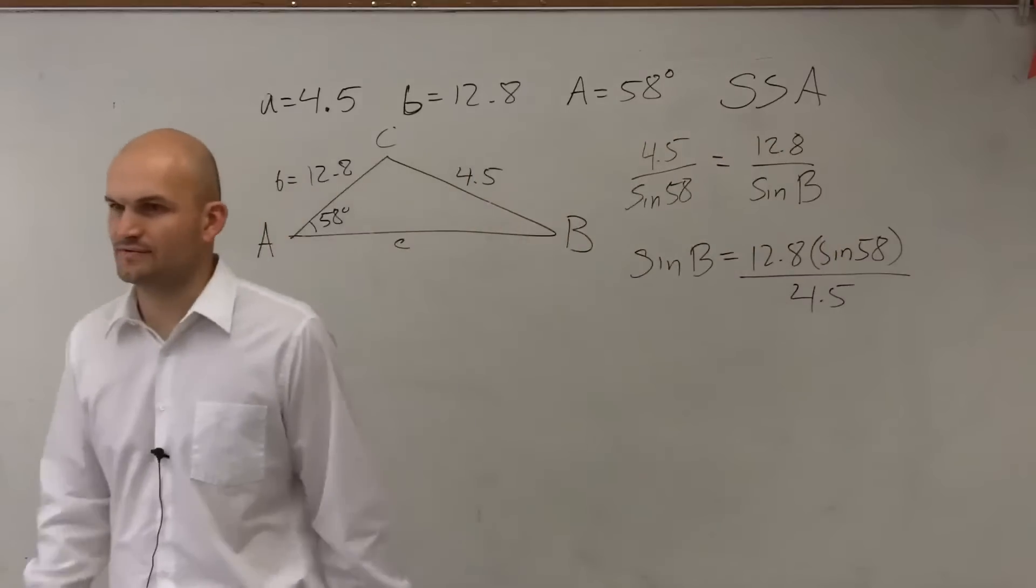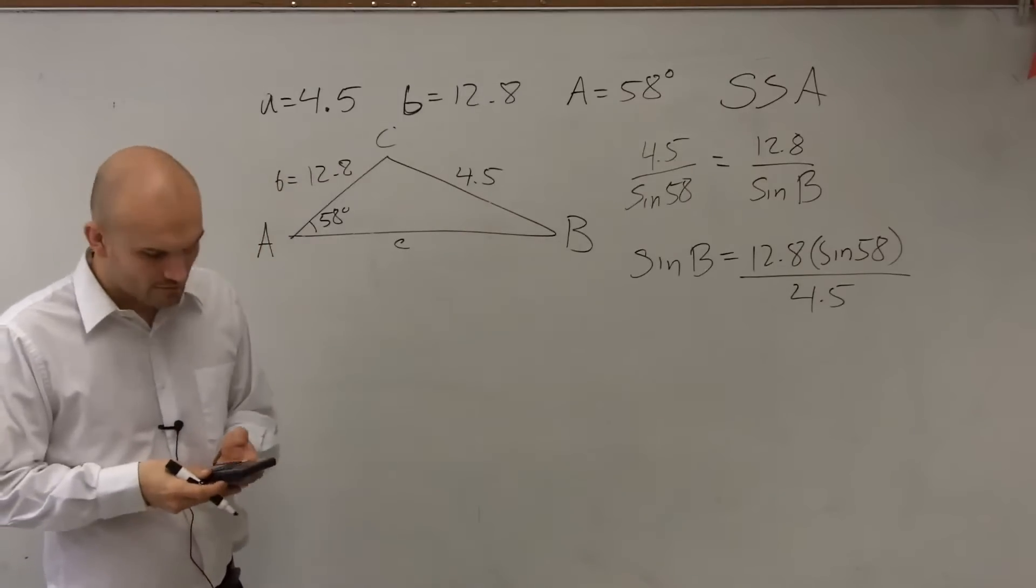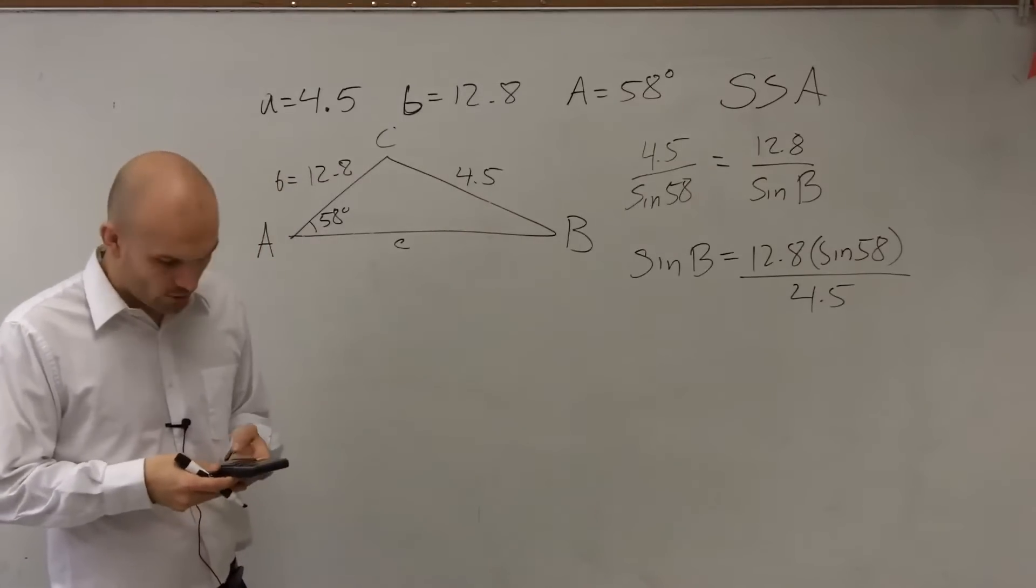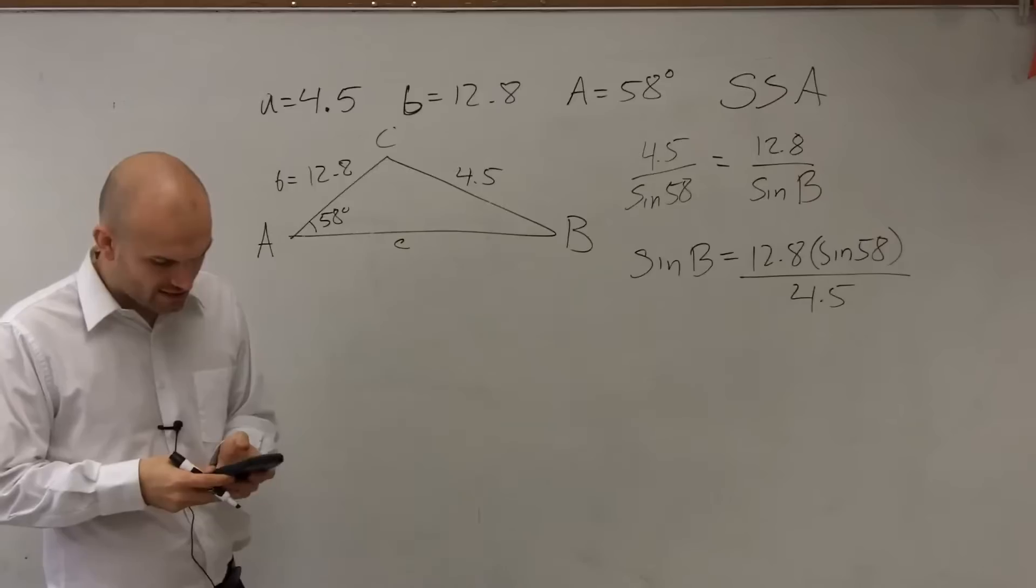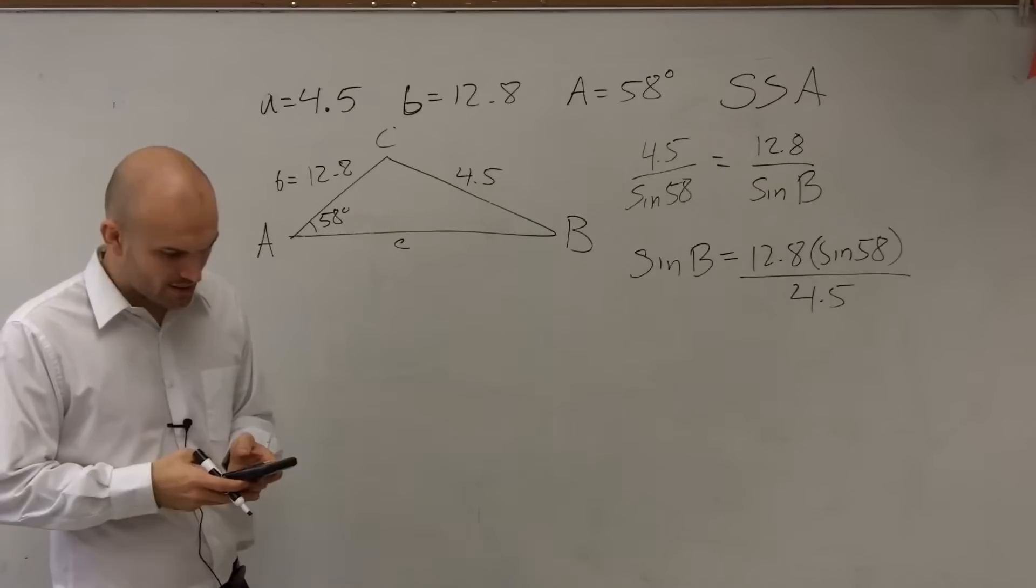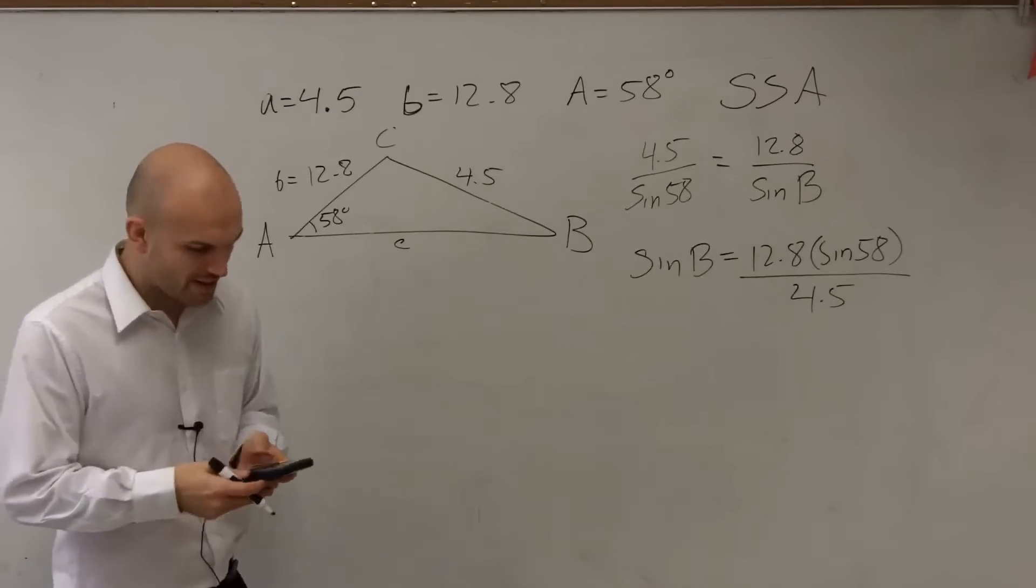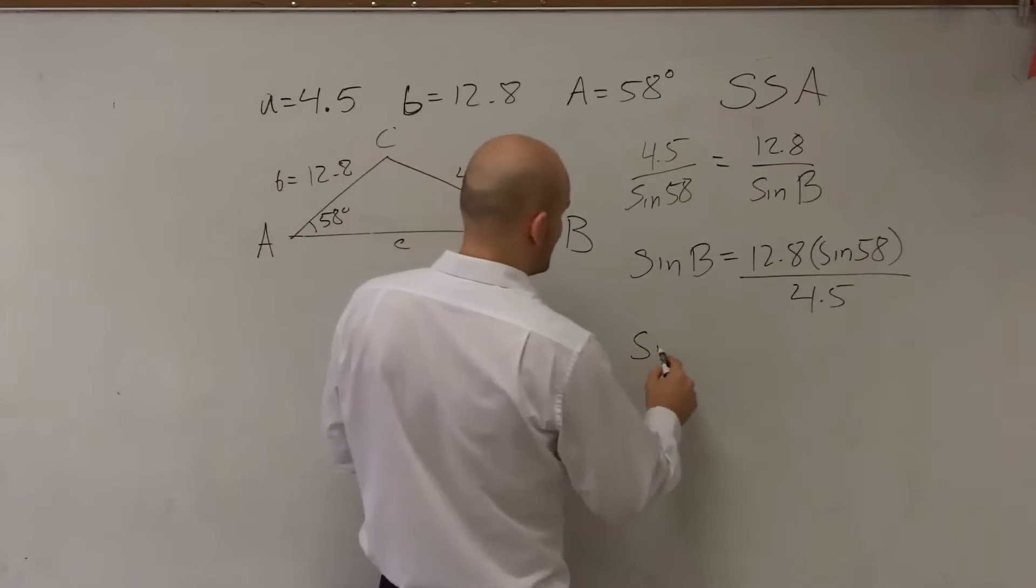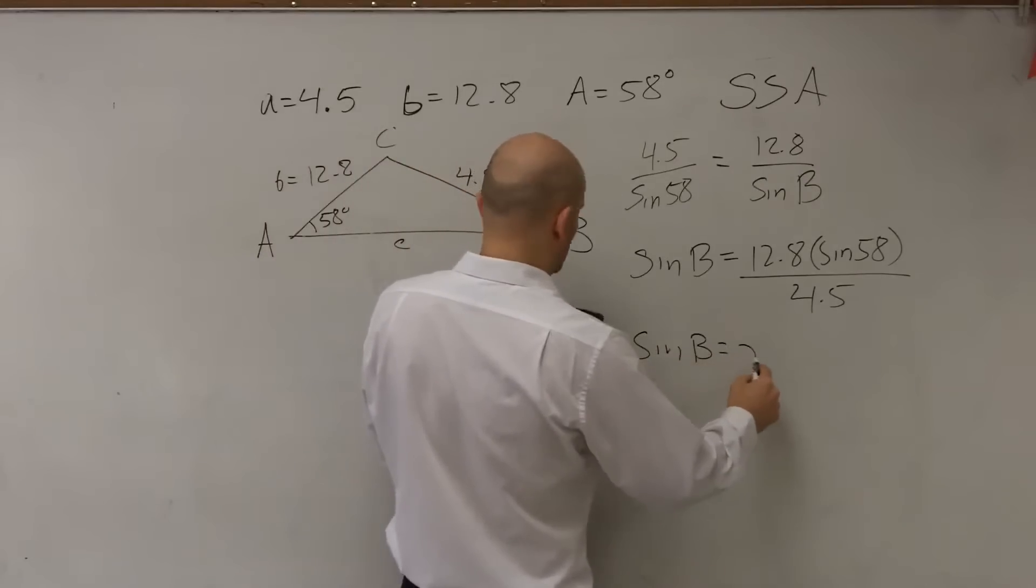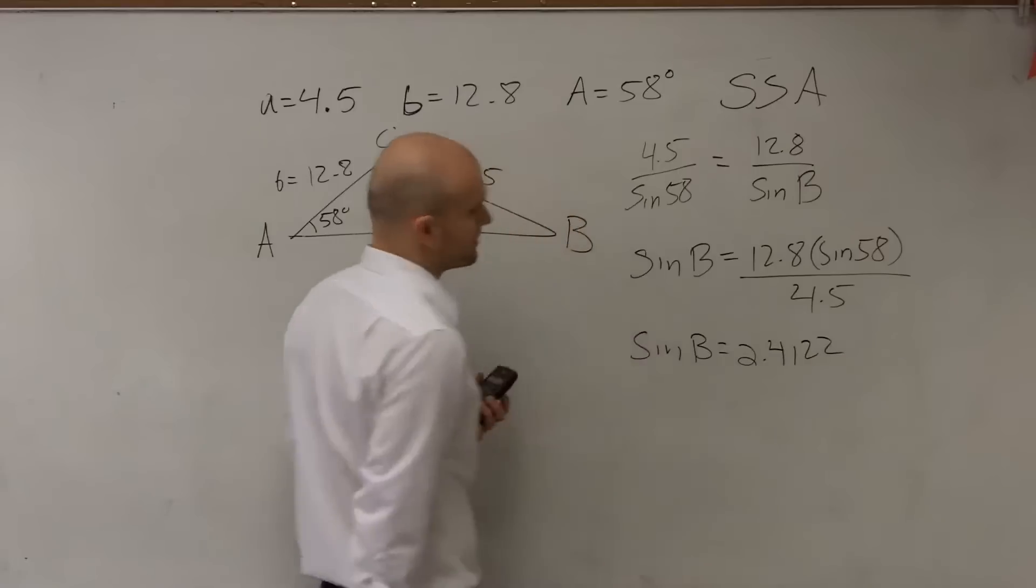So now let's go and solve for the sine of B. So I can say the sine of B equals 12.8 times the sine of 58 degrees divided by 4.5. You guys understand how I just kind of did this? I just kind of did a couple steps all themselves. So I do 58 sine times 12.8, and that gives me 10.85 divided by 4.5, and that gives me the sine of B equals 2.4122.